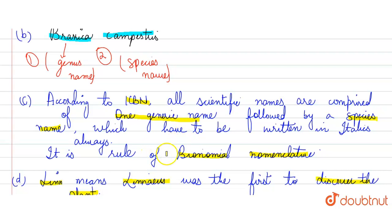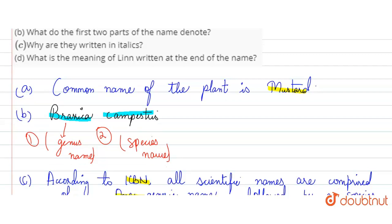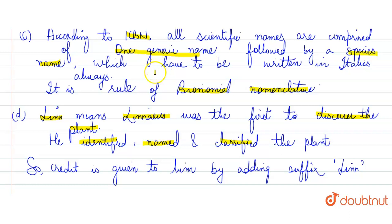And fourth part, we discussed that Lin, why did we put the last name. Because Carolus Linnaeus was the first to discover, identify, name, and classify this plant. So, we put the last name as Lin. Thank you.